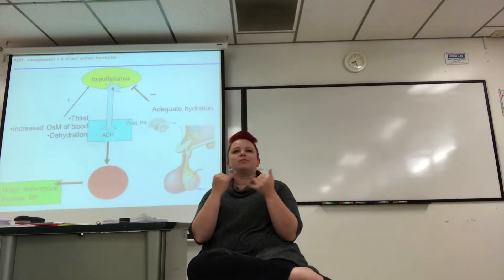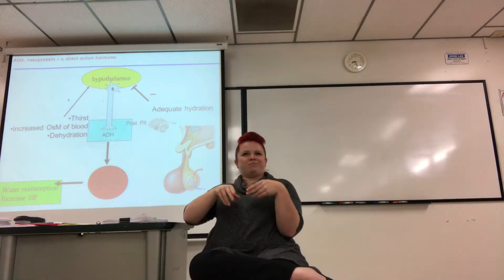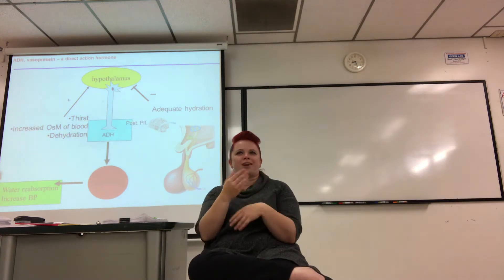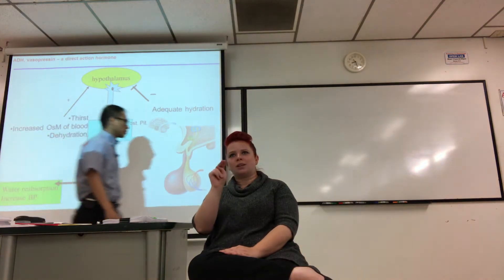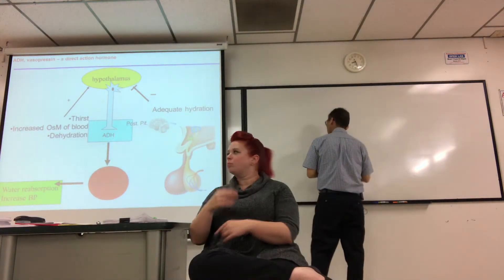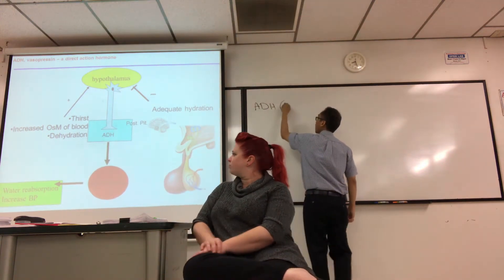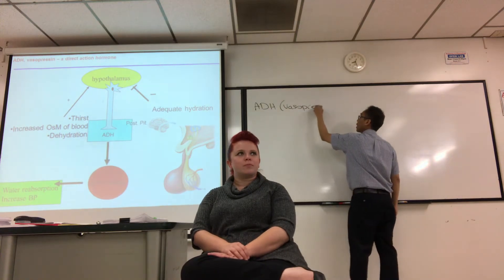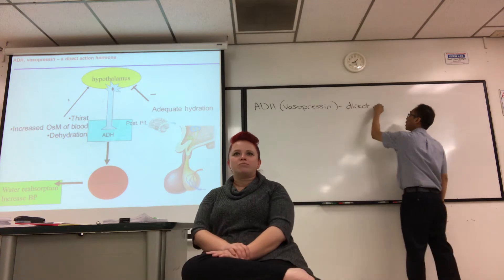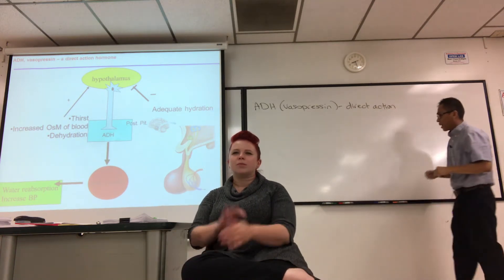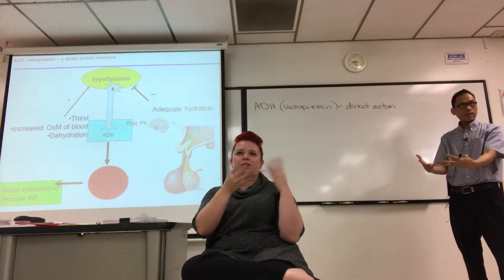Let's start by talking about ADH. I put this together as a simple diagram of what we had talked about last time. ADH, or vasopressin, is a direct action hormone. How do I describe what's meant by direct action? It's created and released into the bloodstream, and when it reaches its target, it does the physiology.